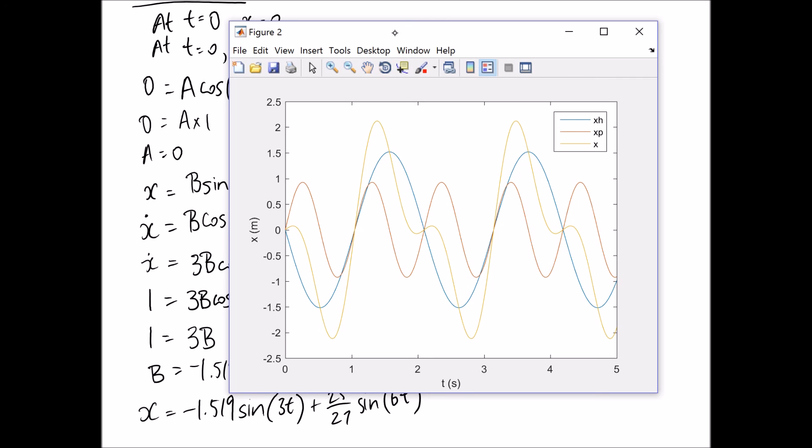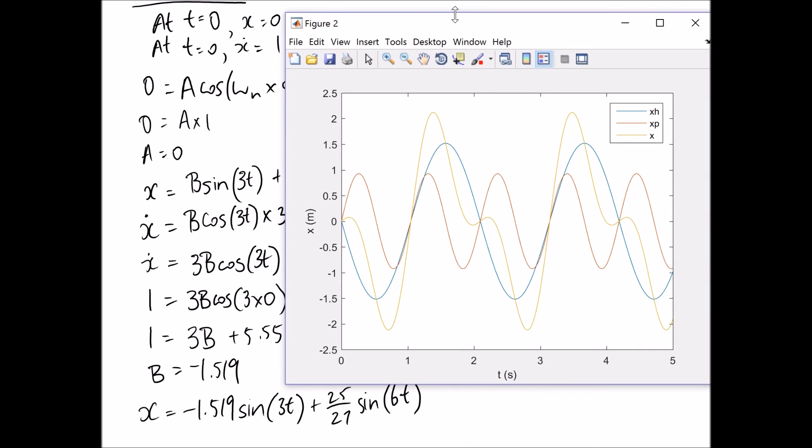I guess the only other things to check are probably your initial conditions. So we said that at time is 0, x is 0. And of course, on our yellow line, our total, we have that happening. And we also know that at t equals 0, x dot, the gradient or the velocity, needs to be 1. And you can see we have a little bit of a velocity coming out of the axis, which would suggest we're on the right track there as well. So that's all that's left for that question. See you in the next one. Thank you.